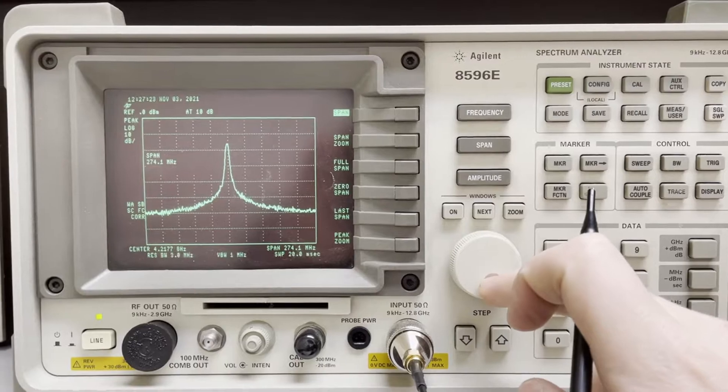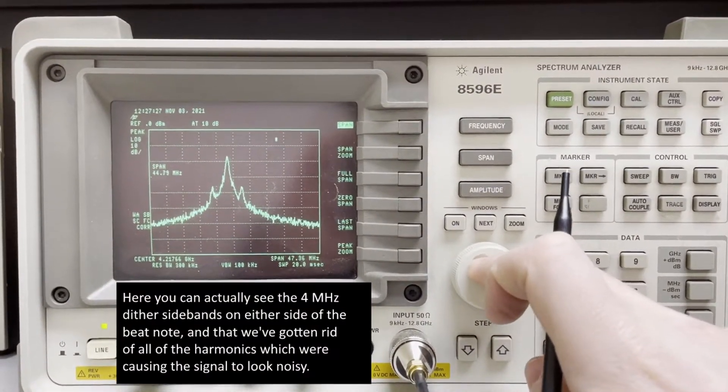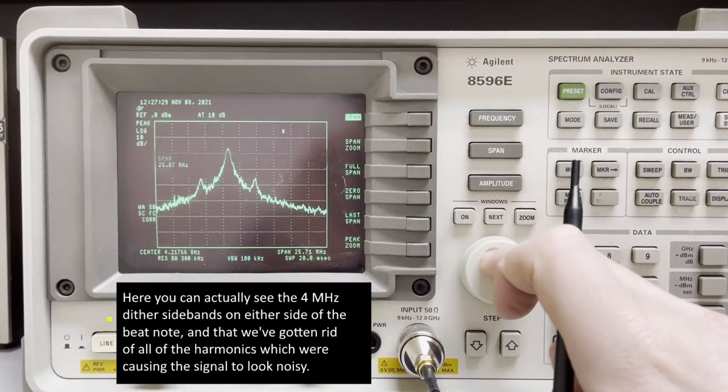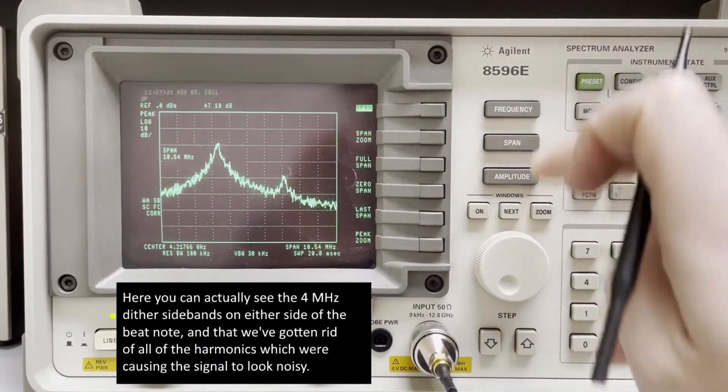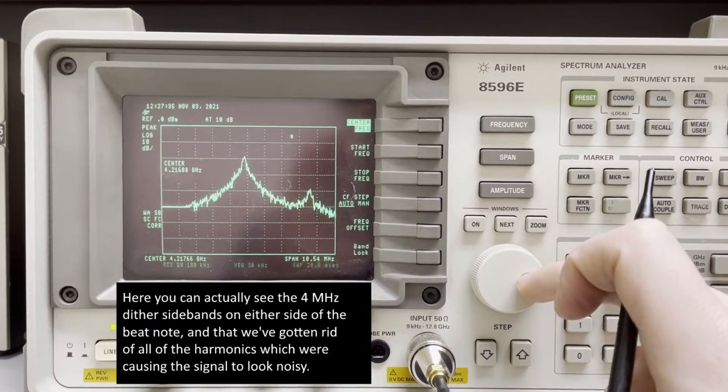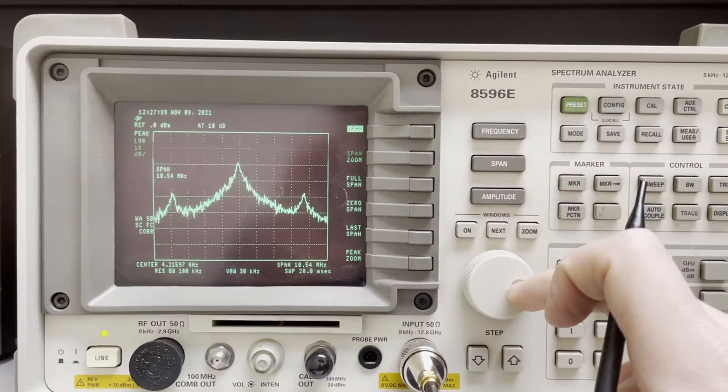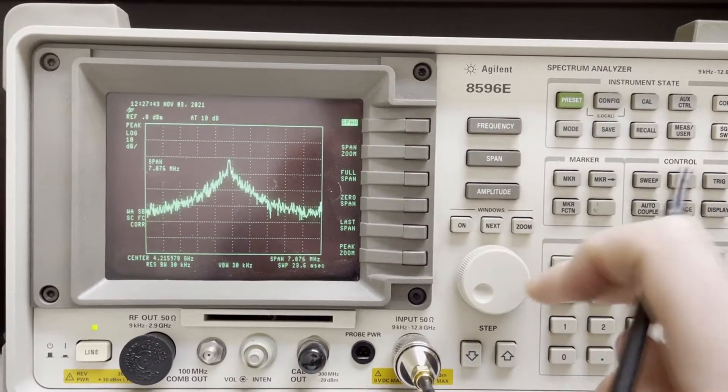So right now I am centering the beat note on the screen, and we are decreasing the span on our spectrum analyzer. And we will be able to tell that we have an offset phase lock if, when we adjust the gain, we see this peak become coherent.